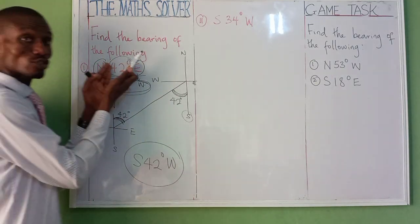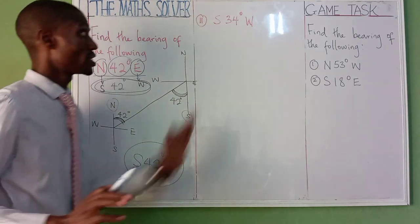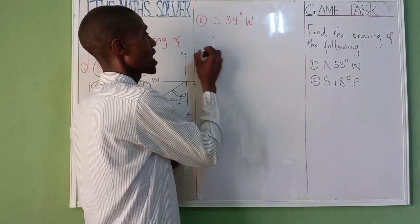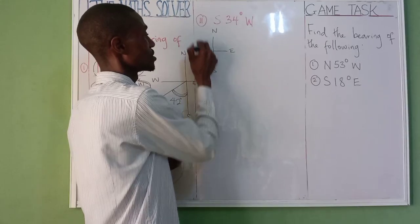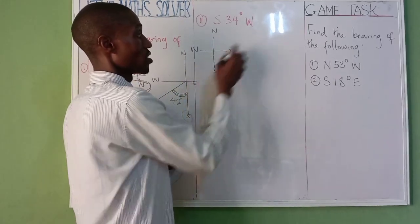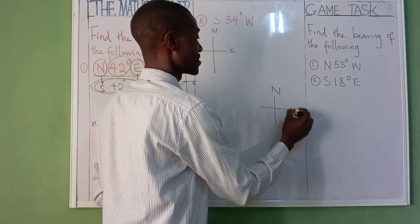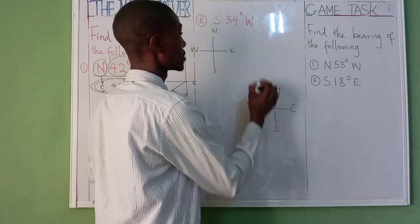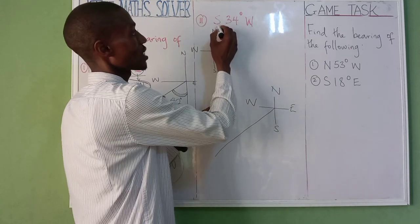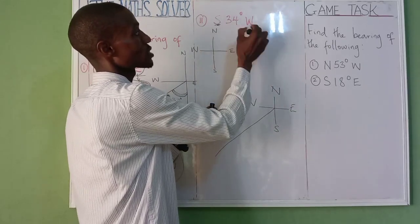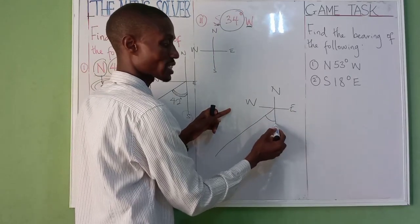So the answer is south 42 degree west. That's the normal method. Now let's start the second one. Draw north, east, south, and west again. We need something between south and west, and the south that is serving is 34, so bring your 34 here.